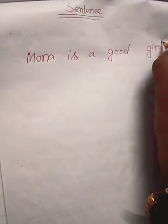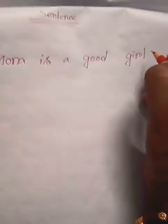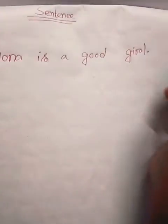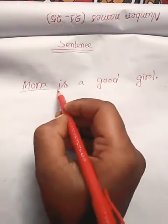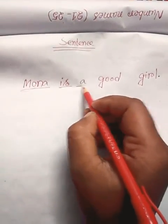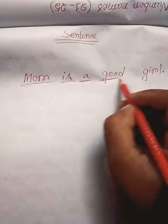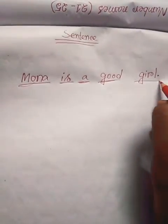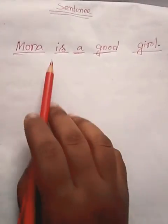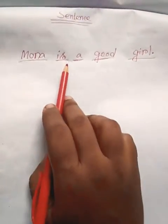Mona is a good girl. It acts as a sentence. Look — 'Mona' is a word, 'is' is a word, 'a' is a word, 'good' is a word, 'girl' is a word. These words are sitting side by side.